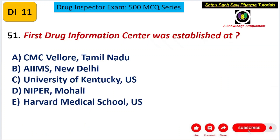The first question: the first Drug Information Center was established at — A) CMC Vellore, B) AIIMS New Delhi, C) University of Kentucky US, D) NIPER Mohali, E) Harvard Medical School US. The Drug Information Center (DIC) provides correct and up-to-date information about medication to healthcare professionals, patients, or the public.